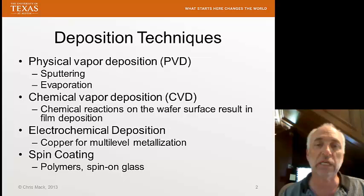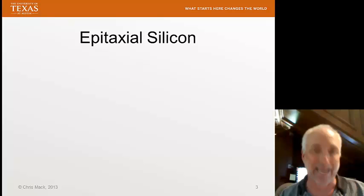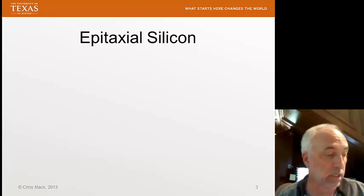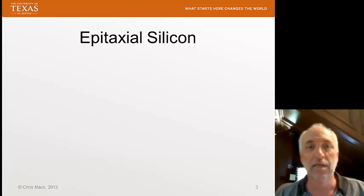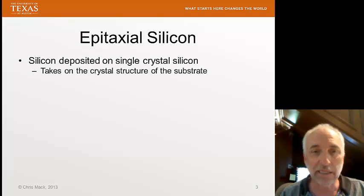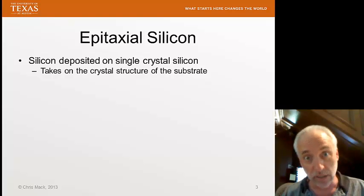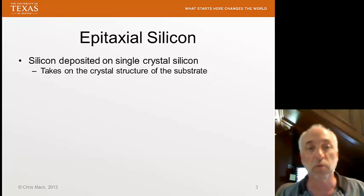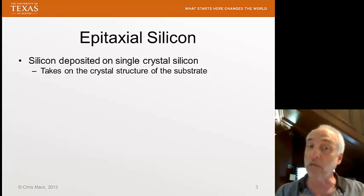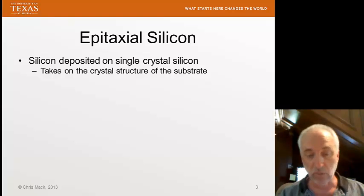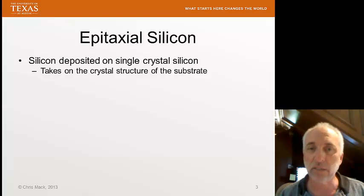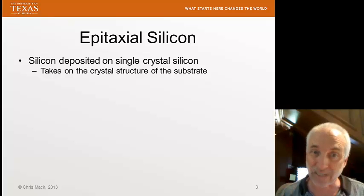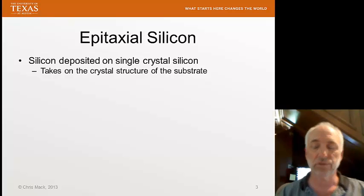So far we've covered PVD and CVD. Let's talk about epitaxial silicon. Epitaxy is from the Greek meaning 'arranges upon,' and this form of deposition deposits silicon on silicon. You've got a silicon single crystal, and we want to deposit new silicon on top of it. The new silicon will attach or bond to the crystal structure of the existing silicon and take on that exact same crystal structure.